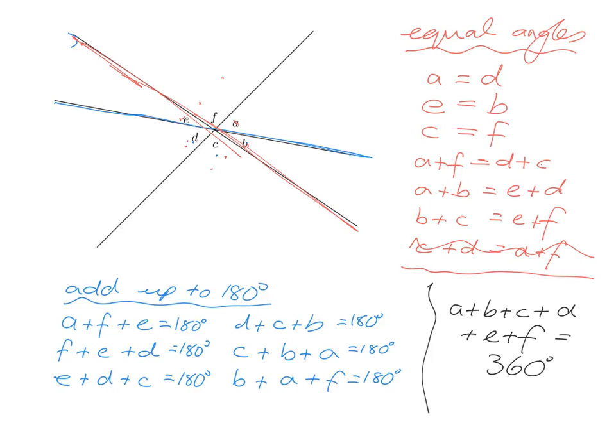Finally, what adds up to 360? Remember, 360 degrees is a full revolution — all the way around a circle. So obviously, all six angles together: a plus b plus c plus d plus e plus f equals 360.